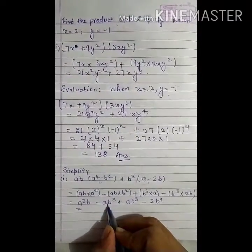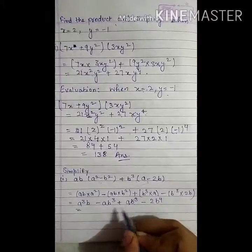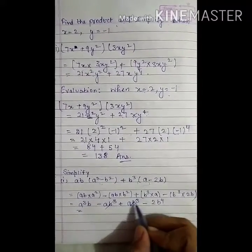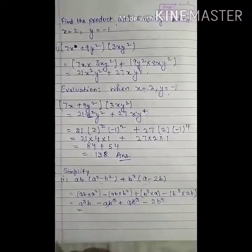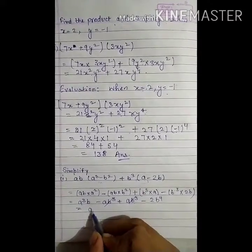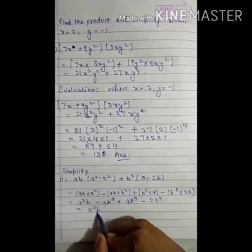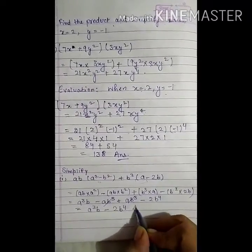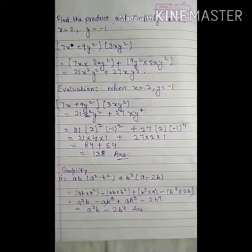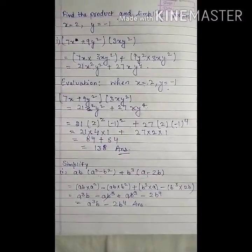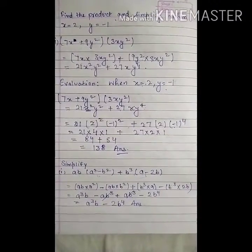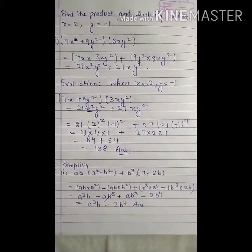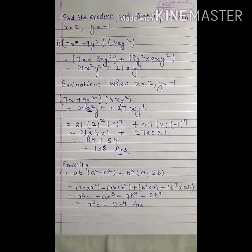Now minus ab cubed plus ab cubed — these are like terms and minus 1 plus 1 equals 0, so they cancel. We are left with a cubed b minus 2b to the power 4. Similarly you can solve all the parts of questions 1, 2, and 6. Thank you and have a good day.